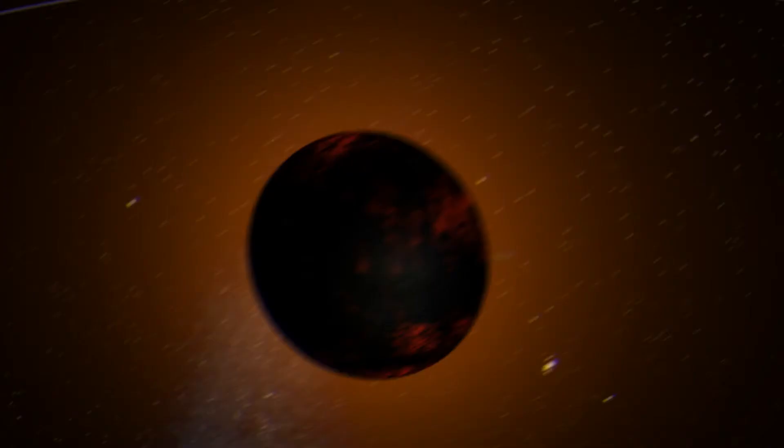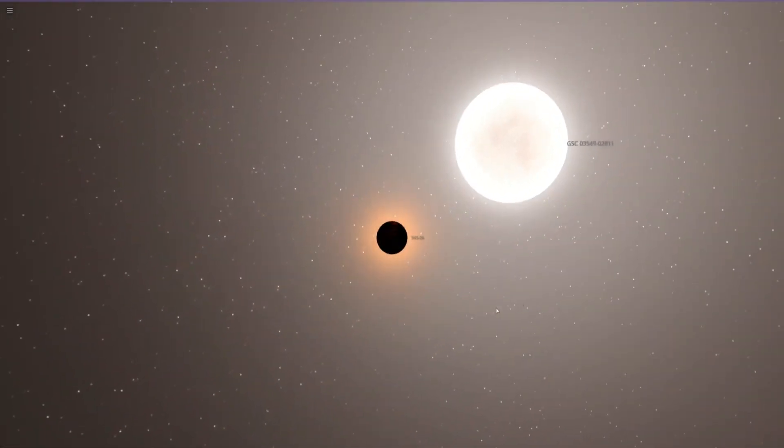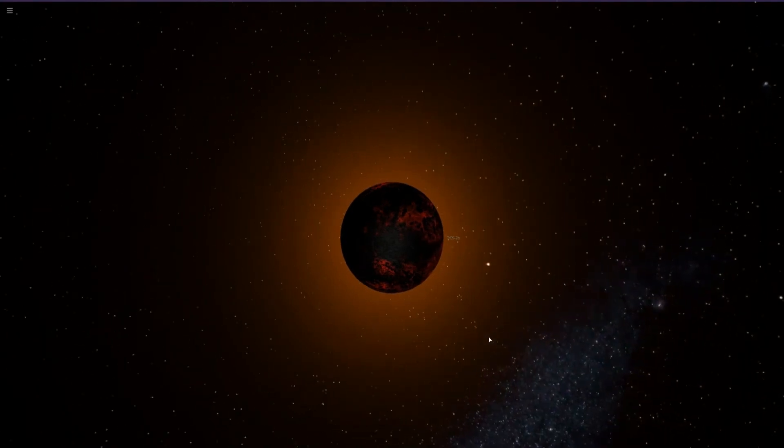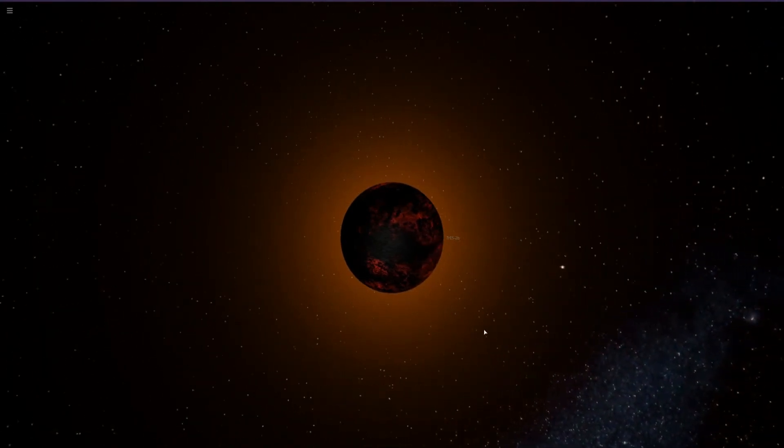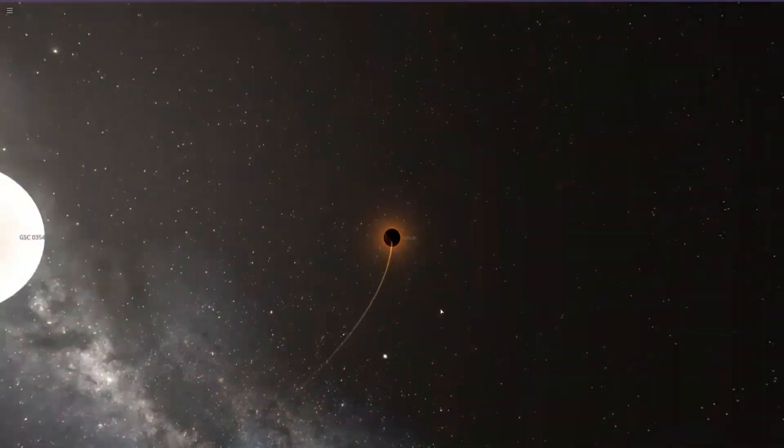Number 3: TrES-2b. This planet was discovered in 2011 and it is the darkest planet ever discovered. This planet doesn't reflect light. Its atmosphere is composed of gases that absorb the star's incoming radiation, which is why it has an evil red color.